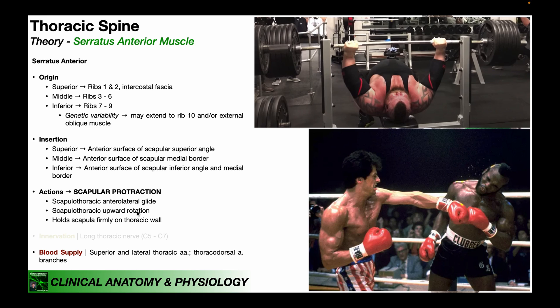A major function of the serratus anterior is also to hold the scapula firmly against the thoracic wall. When the serratus anterior muscle is weak, the scapula tends to separate away from the rib cage and away from the thoracic wall, producing something called scapular winging, which we'll discuss shortly.